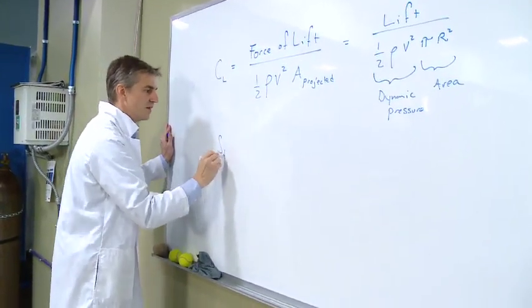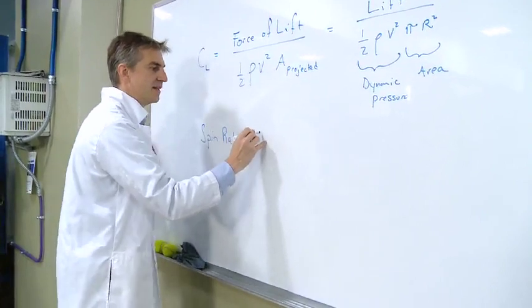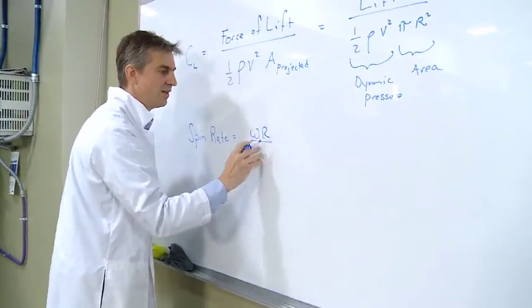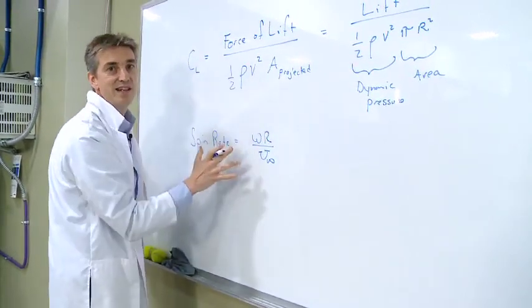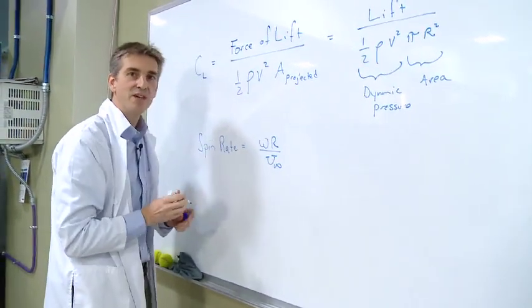We want to non-dimensionalize the spin as well. There's a dimensionless equation for spin rate. It's basically the tangential velocity, omega r, divided by the speed of the wind tunnel. If we non-dimensionalize our data in this way, we can compare anybody's data to anybody else's data.